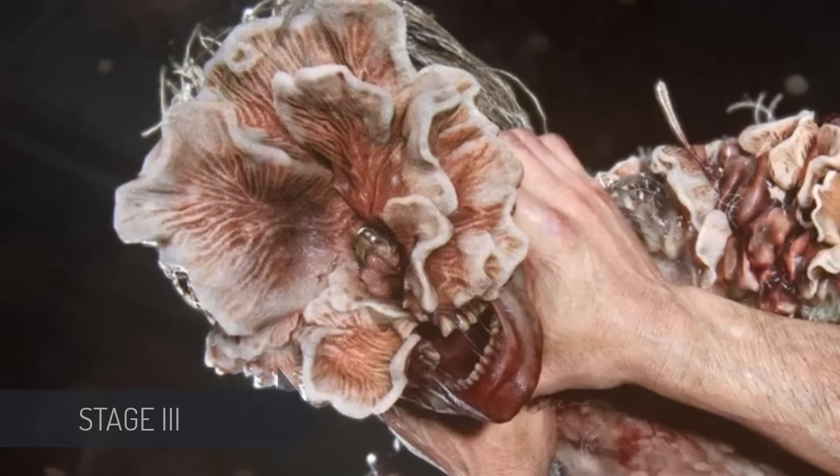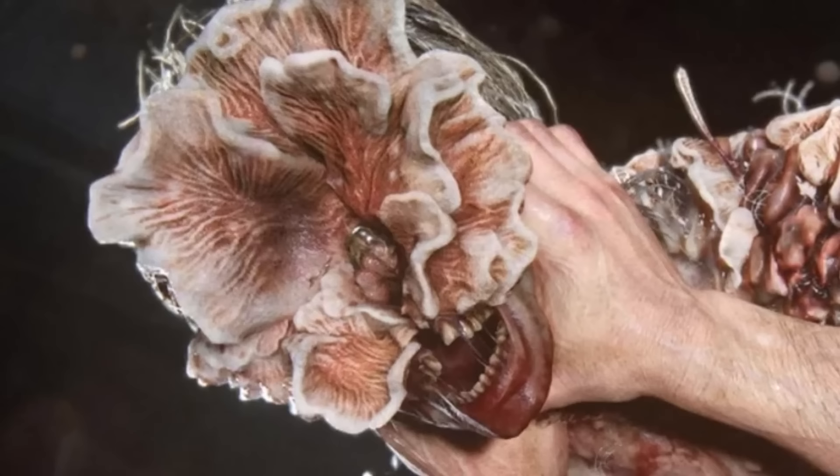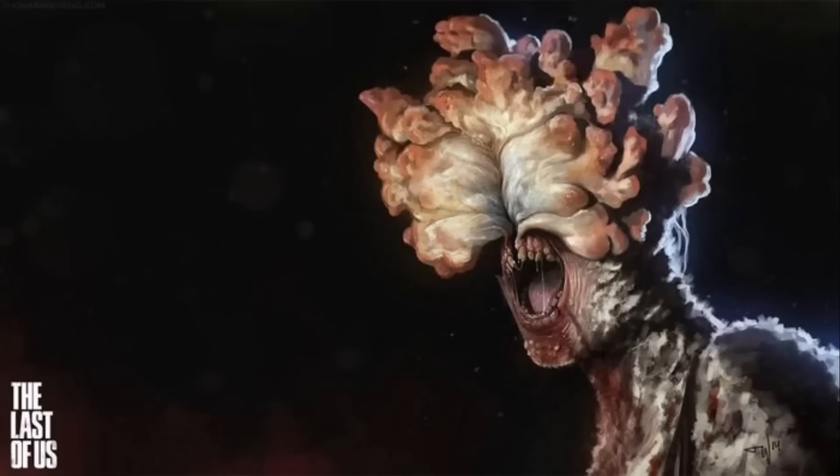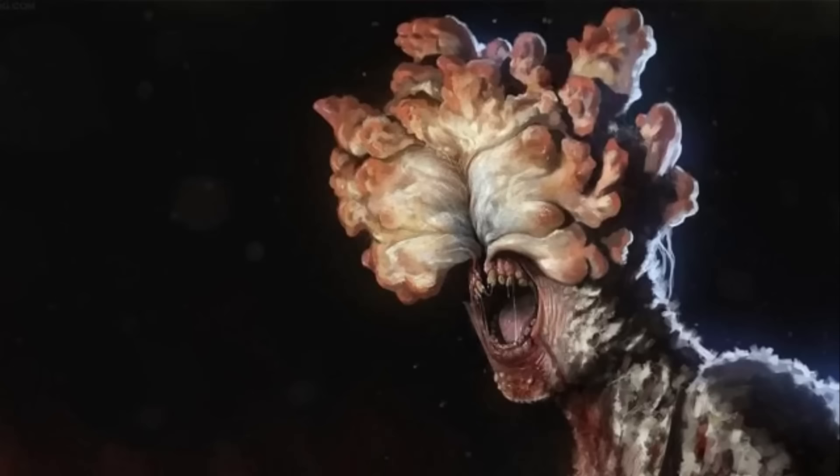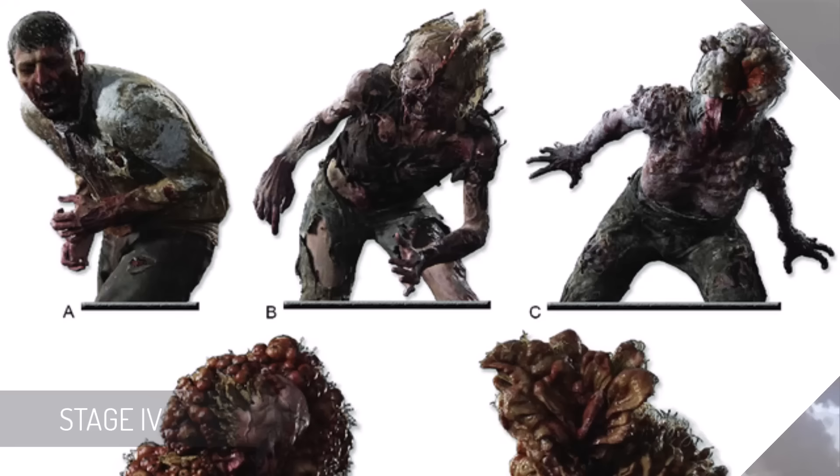Stage two happens within two weeks, during which the fungus begins to change their vision as a result of progressive cordyceps fungal growth over the head and face, and the visual cortex being corrupted. They still retain a rudimentary form of intelligence. Stage three occurs after a year — the infection progresses, scarring their faces and blinding them, causing them to develop a rudimentary type of echolocation. Gradually, the eyes and nose are replaced with a hardened floral outgrowth of the fungi resembling a brain that has been exploded.